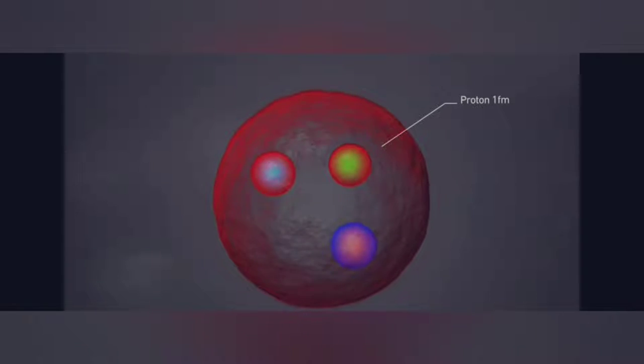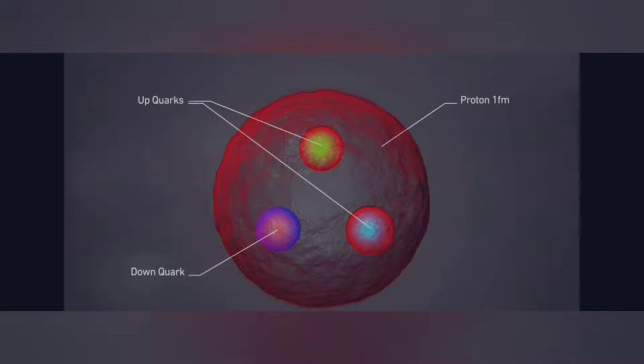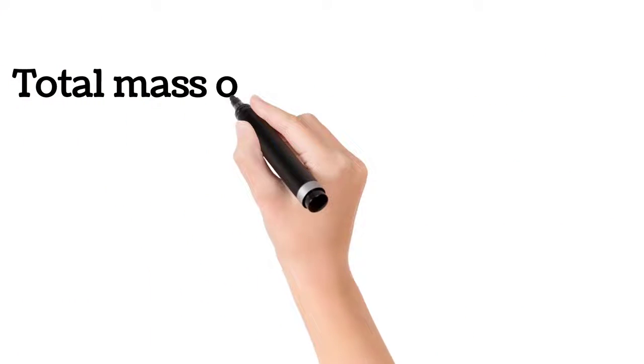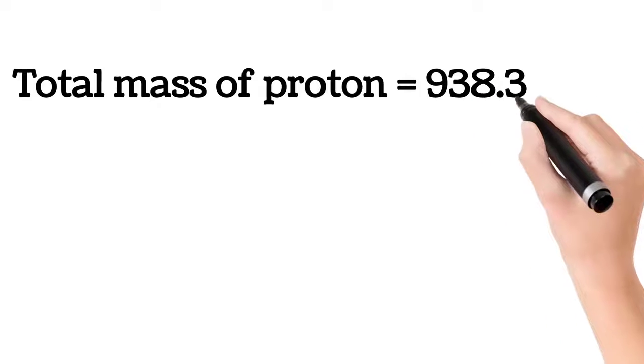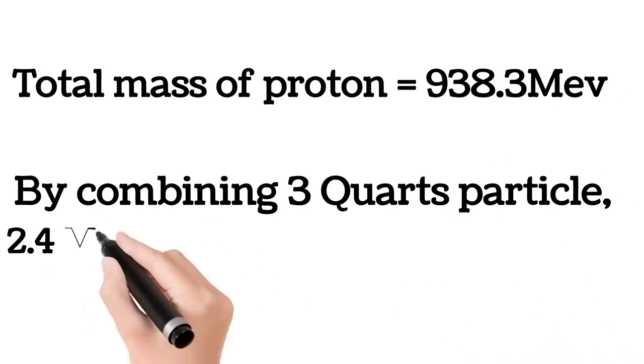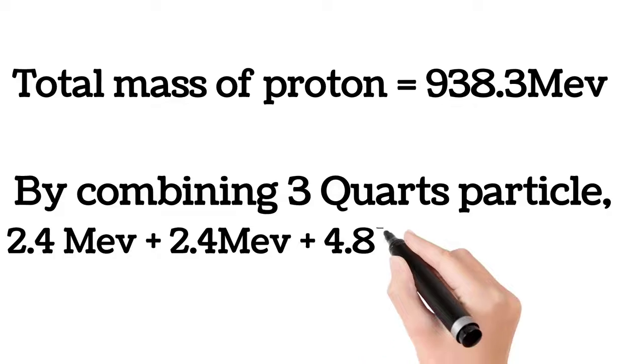Three quark particles - two up quarks and one down quark - make up a proton. The proton mass is 938.3 MeV, but the three quark particles combined have only 9.6 MeV.